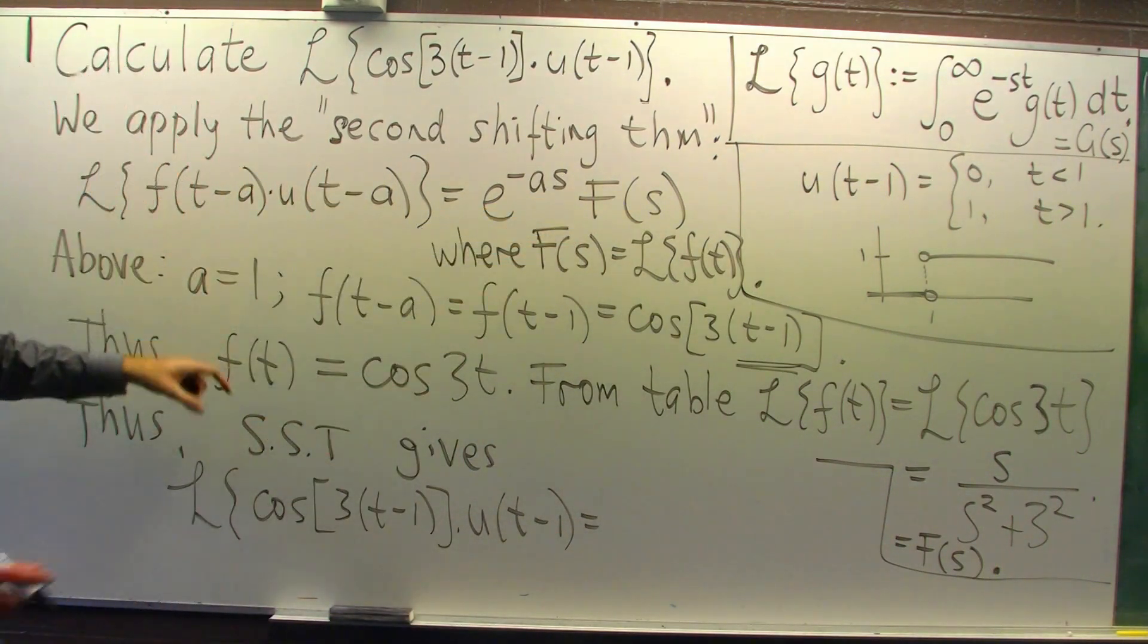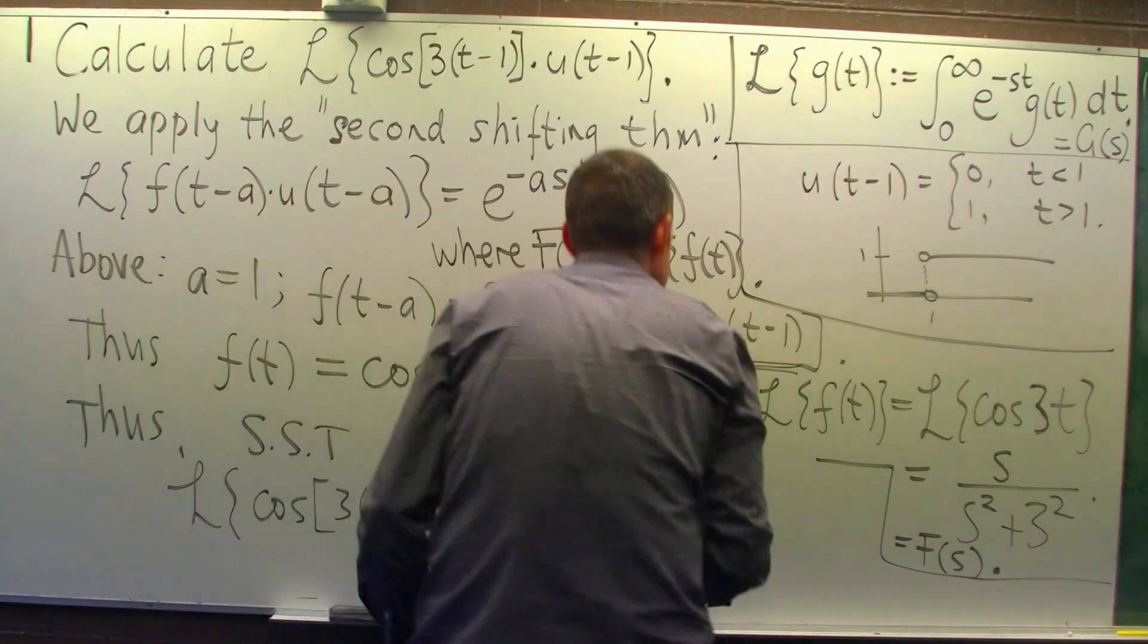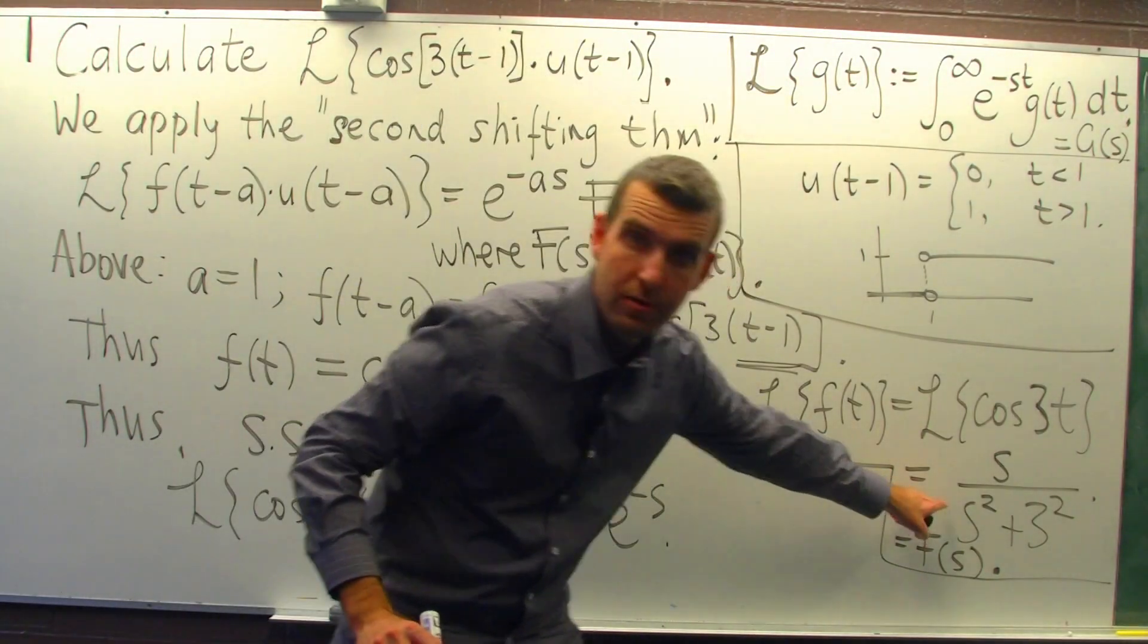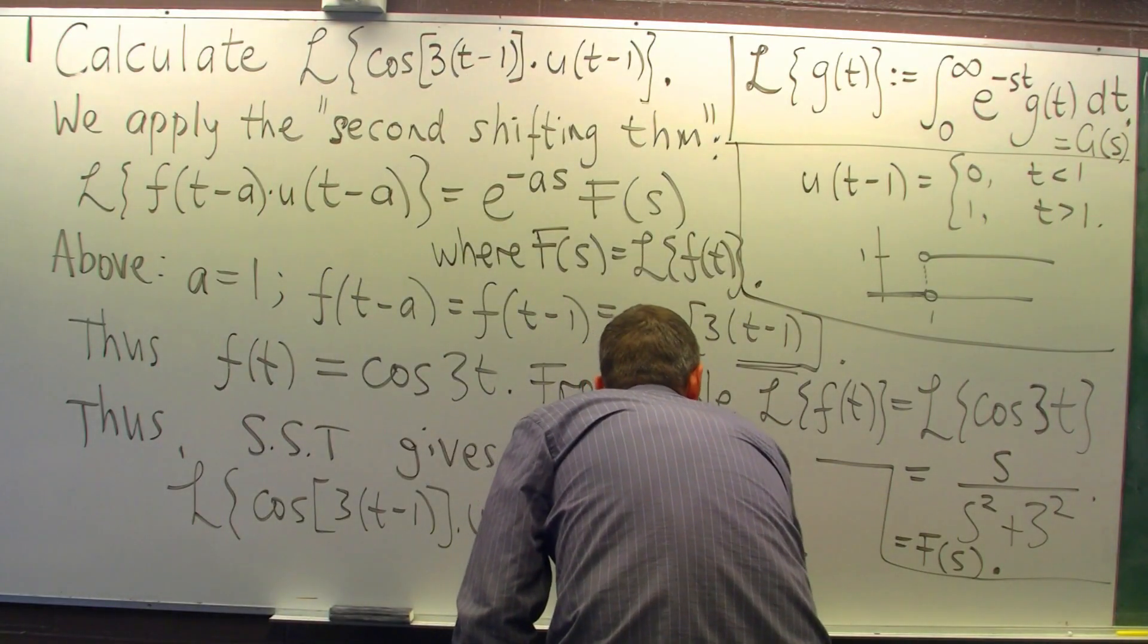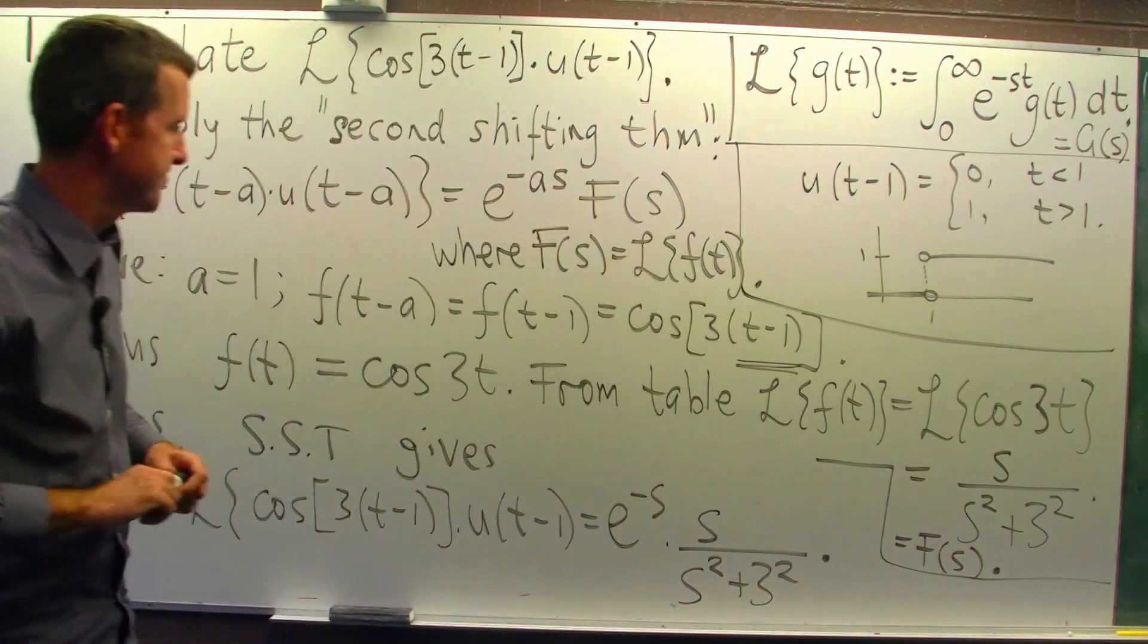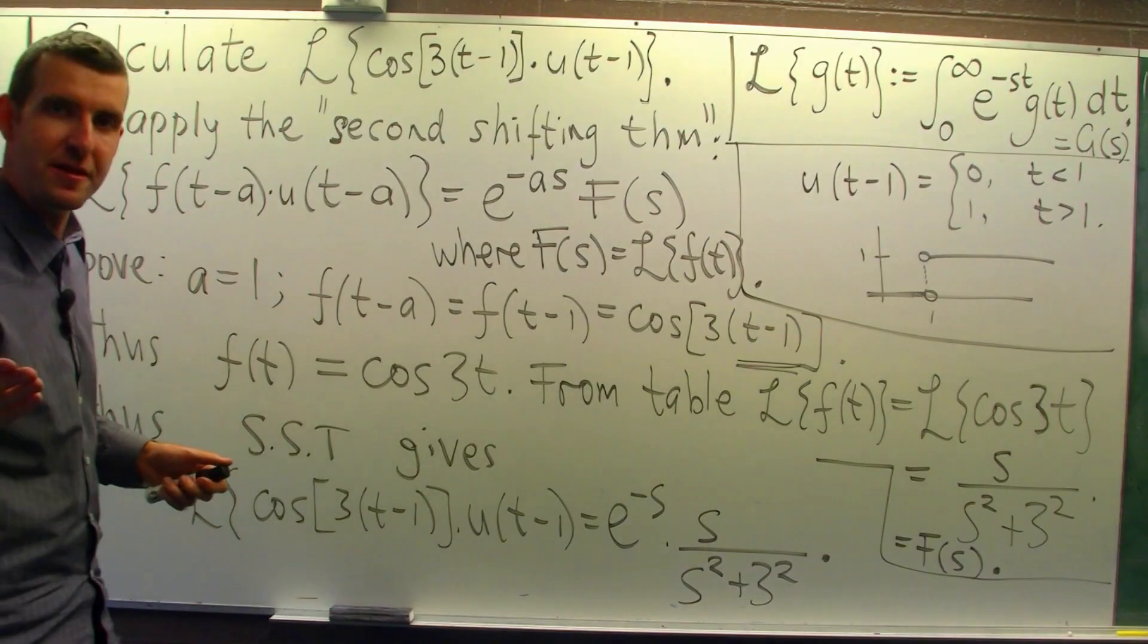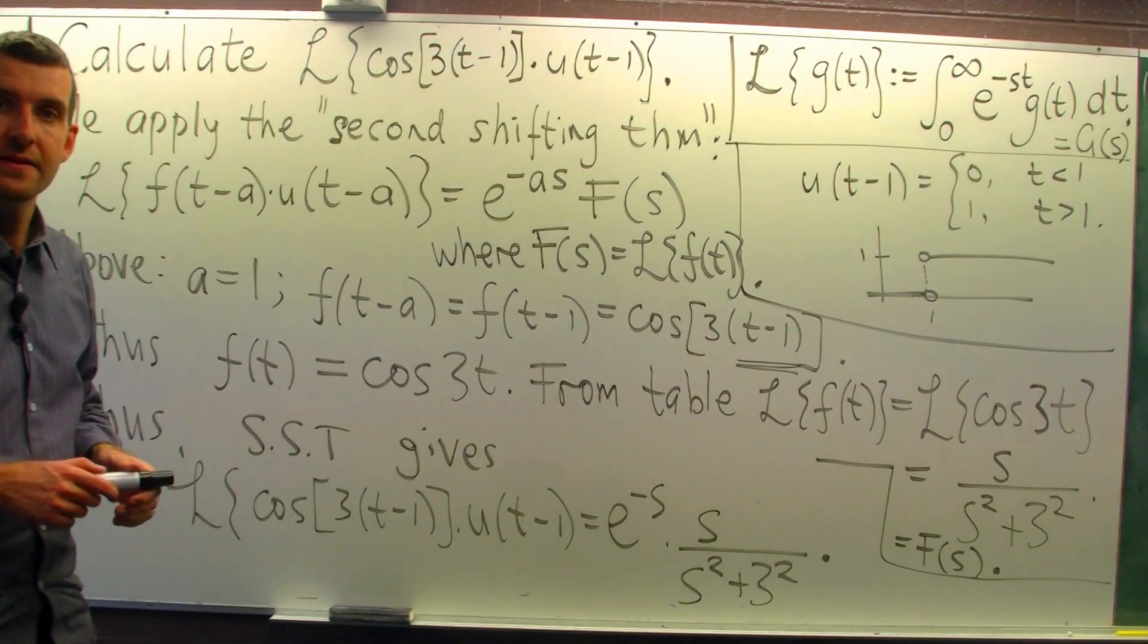The Laplace transform of this is e to the minus a s times this. Now, a is one. So this will be e to the minus s multiplied by this. So that's your Laplace transform down here of this.